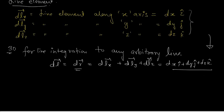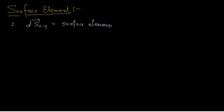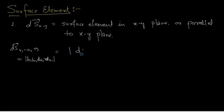Now let us write the surface element of the Cartesian coordinate system. The next topic we are going to deal with is the surface element. For the surface element, DS vector XY will represent the surface element in the XY plane, or parallel to the XY plane. Remember that DS vector of U1, U2 was given by the modulus of H1 DU1 cross H2 DU2, and its direction is normal to the surface.